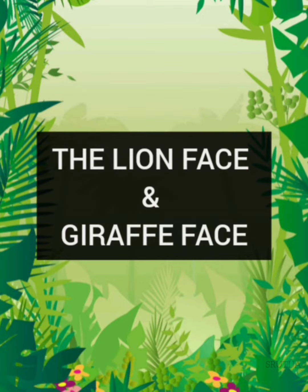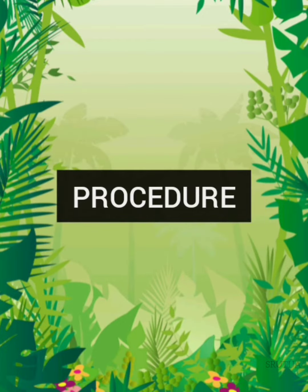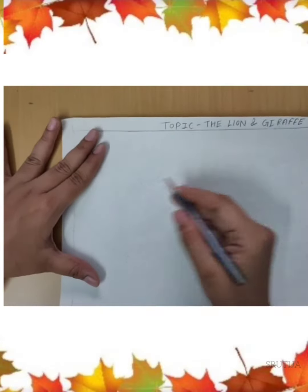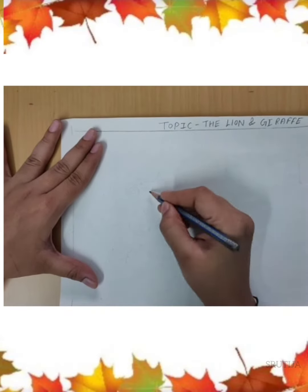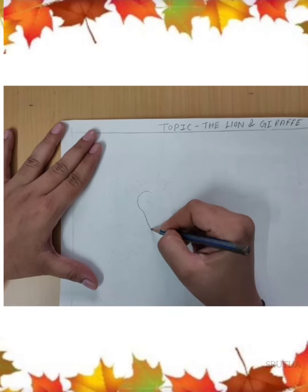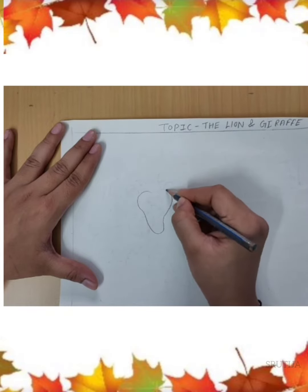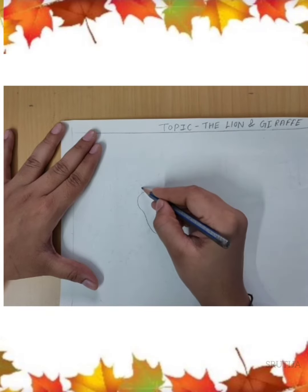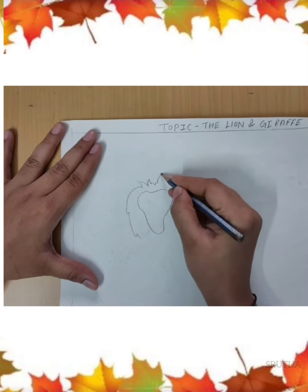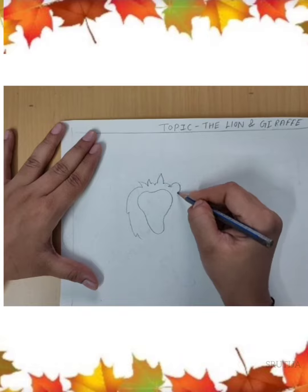First of all, study the procedure: place a paper, make a margin, and write the topic name. First, we can show the lion face who is roaring, then we can show a little lion body posture.